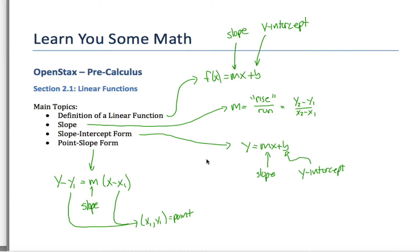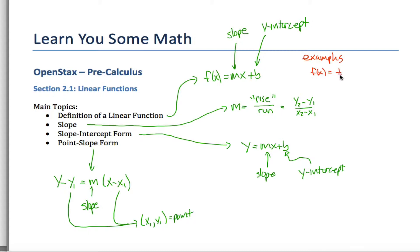Here is the quick version of section 2.1 from OpenStax's pre-calculus. In this section, we're introducing linear functions. What you need to know is a linear function is a function that can be written as f(x) = mx + b. For example, f(x) = (1/3)x − 2 is a linear function.